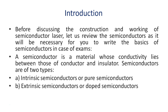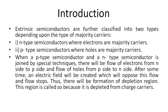A semiconductor is a material whose conductivity lies between those of a conductor and an insulator. Semiconductors are of two types: intrinsic semiconductors, or pure semiconductors, and extrinsic semiconductors, or doped semiconductors. Extrinsic semiconductors are further classified into two types depending upon the type of majority carriers: N-type semiconductors, where electrons are majority carriers, and P-type semiconductors, where holes are majority carriers.